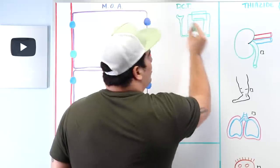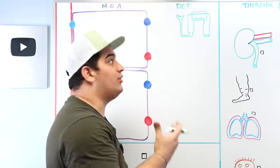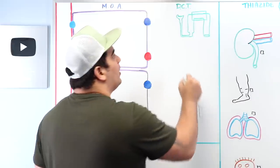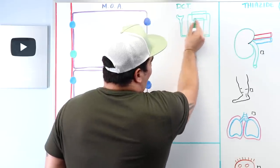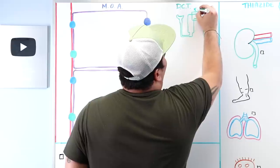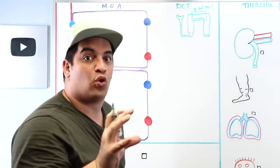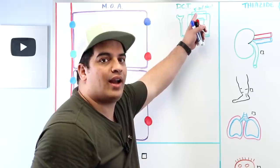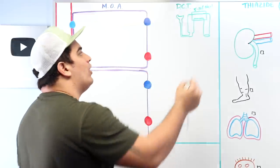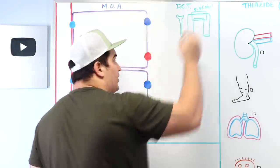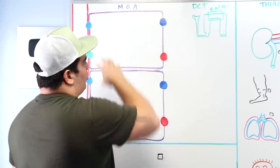Thiazide and thiazide-like diuretics are commonly used for high blood pressure. They work by controlling sodium chloride: in the distal convoluted tubule, around five to ten percent of sodium chloride is resorbed. If we inhibit that reabsorption, water follows sodium chloride, decreasing blood volume and blood pressure. Let's zoom in on a distal convoluted tubular cell.